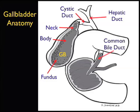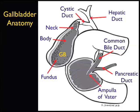We also see the cystic duct draining the bile from the neck of the gallbladder and joining into the hepatic duct, which drains bile from the liver. The confluence of the cystic duct and hepatic duct forms the common bile duct, and stones lodged within this area can cause choledocholithiasis. We also see the pancreatic duct joining to the common bile duct and emptying into the duodenum at the ampulla of Vater. Stones that may lodge here can cause gallstone pancreatitis.